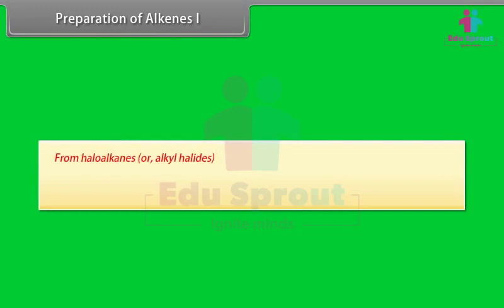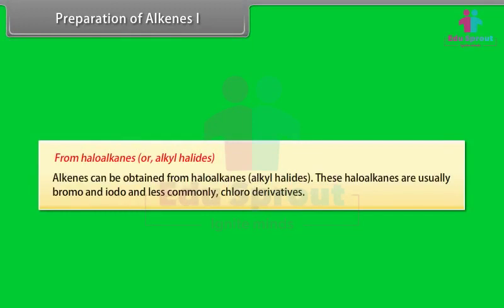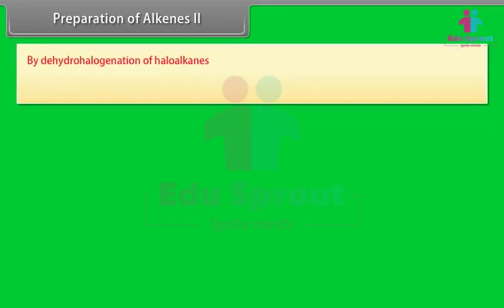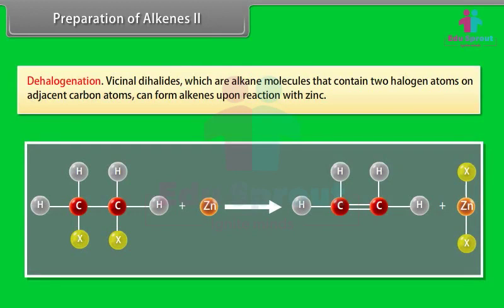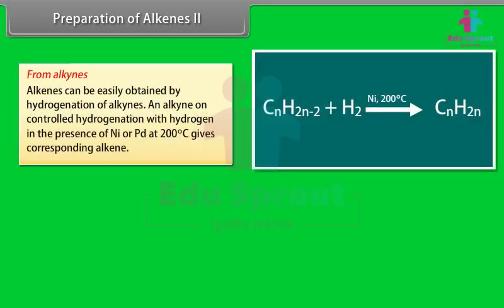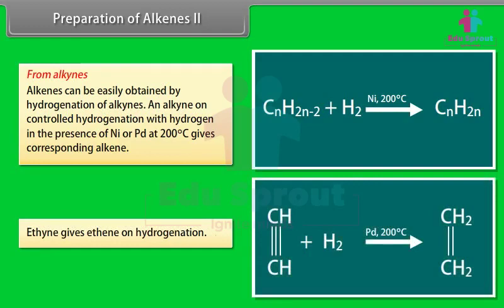From haloalkanes or alkyl halides: alkenes can be obtained from haloalkanes, usually bromo- and iodo-, and less commonly chloro-derivatives. By dehydrogenation of haloalkanes: haloalkanes on heating with alcoholic potash lose one molecule of hydrogen halide to give an alkene. Bromoethane gives ethene. Dehalogenation: vicinal dihalides, alkane molecules containing two halogen atoms on adjacent carbon atoms, can form alkenes upon reaction with zinc. From alkynes: alkenes can also be obtained by controlled hydrogenation of alkynes with hydrogen in the presence of Ni/Pd at 200°C.